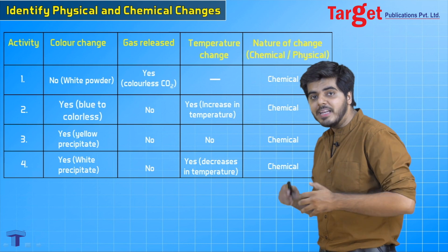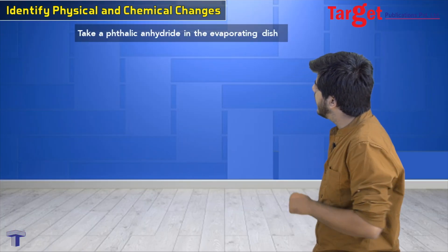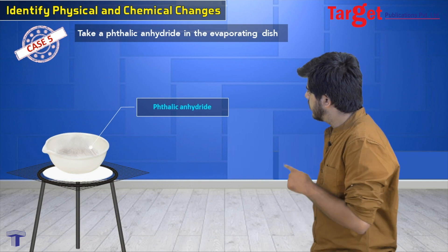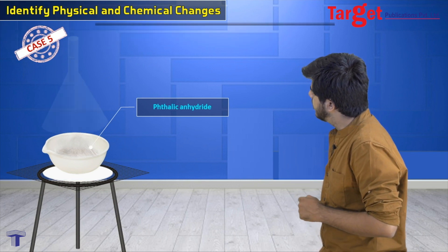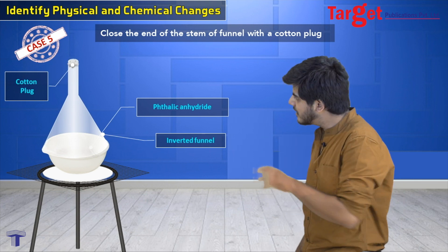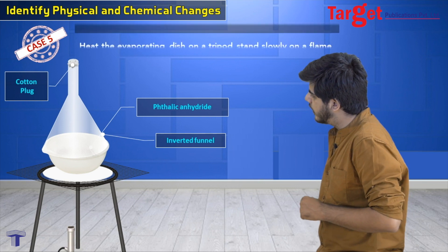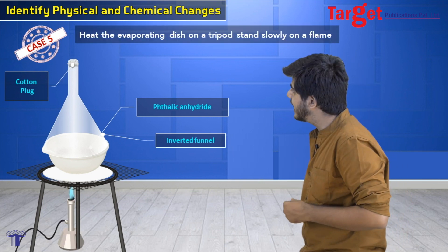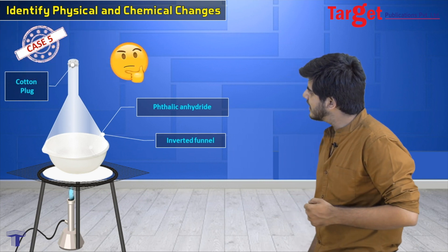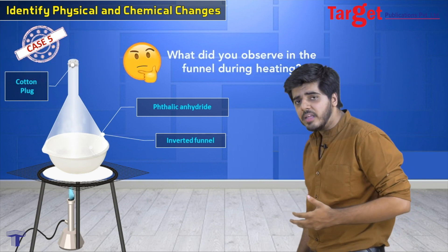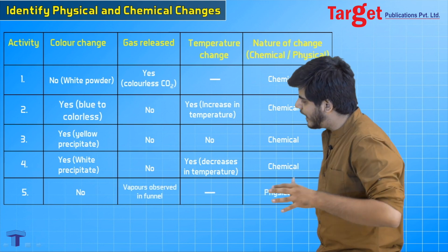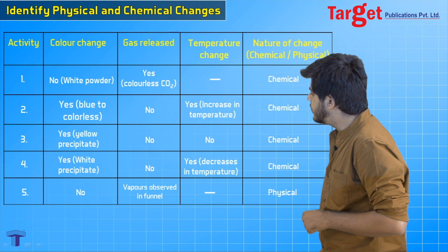Now let us move to the fifth and final case: take phthalic anhydrous in an evaporating dish. Close the end of the stem of the funnel with a cotton plug and place the inverted funnel over the evaporating dish. Heat the evaporating dish slowly on a tripod stand on a flame. Observe what happens in the funnel during the heating. In case number five: color change — no; gas released — vapors observed in the funnel.